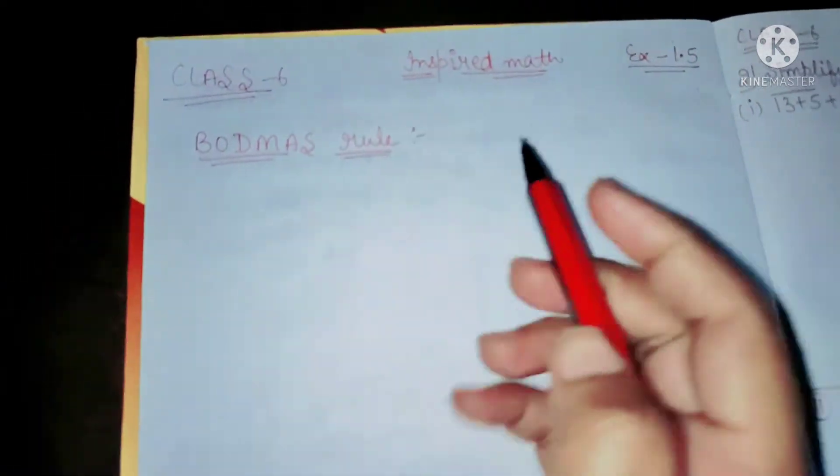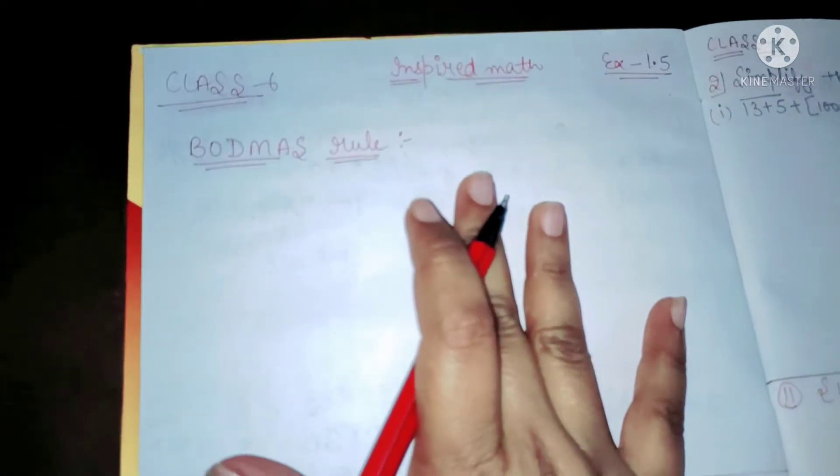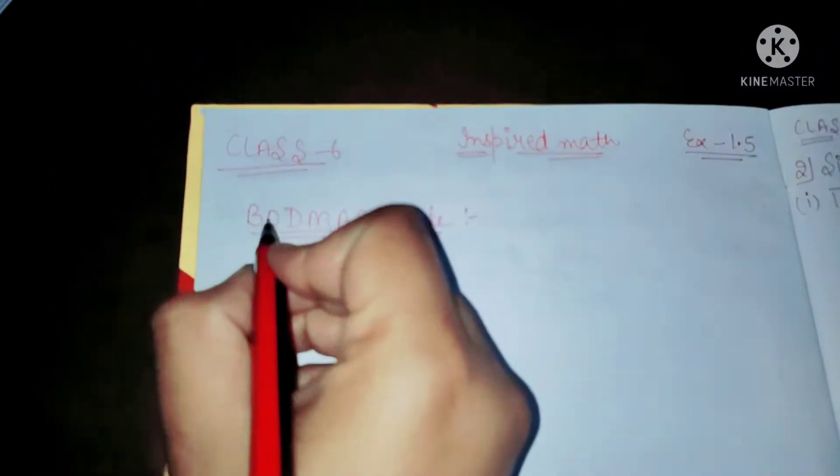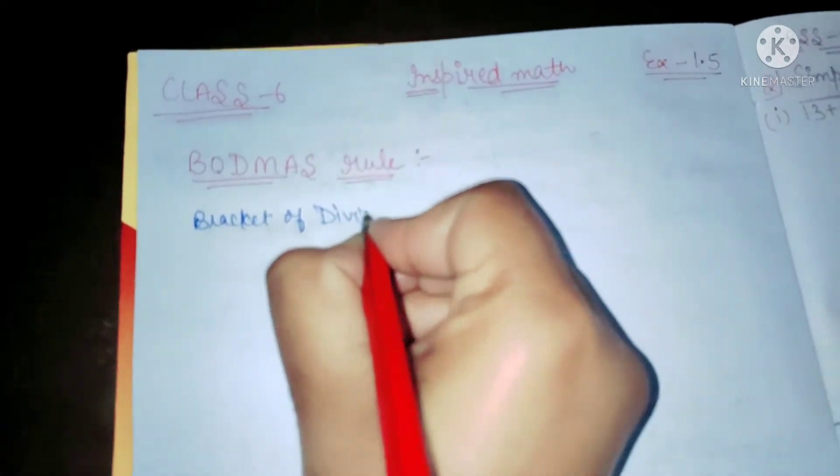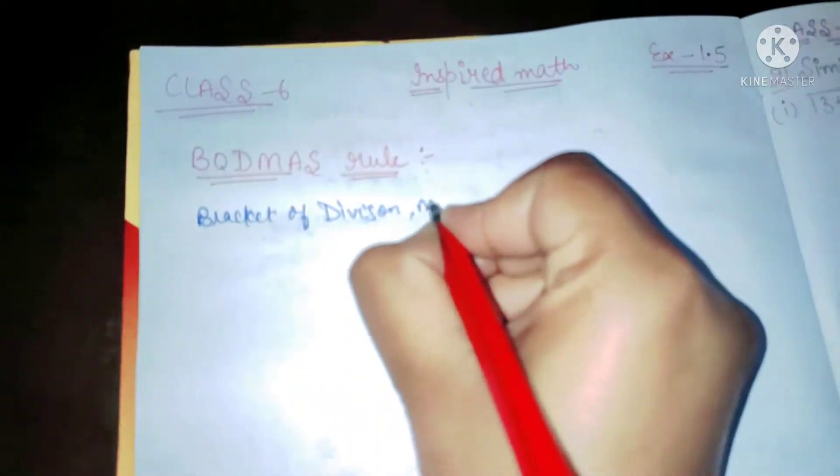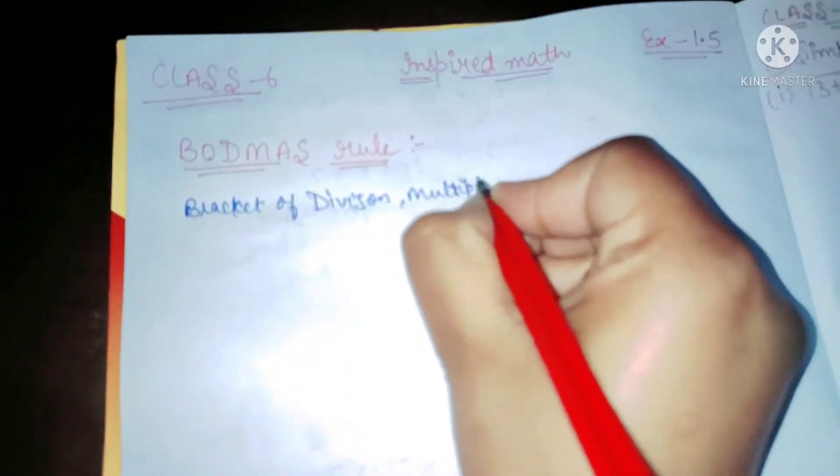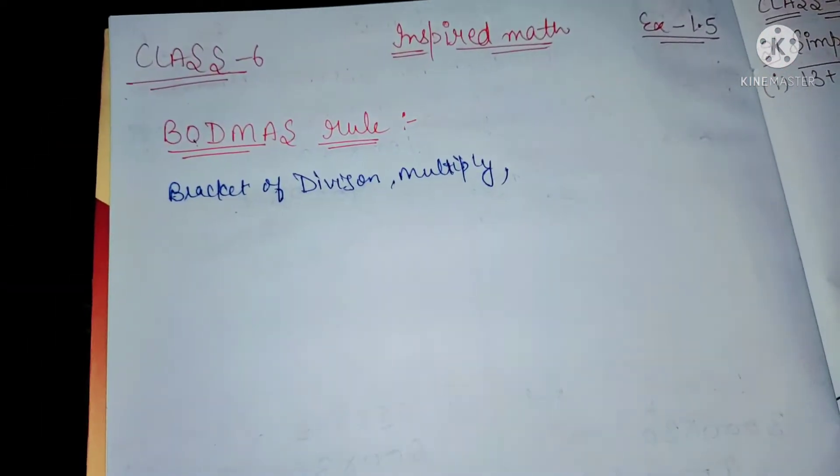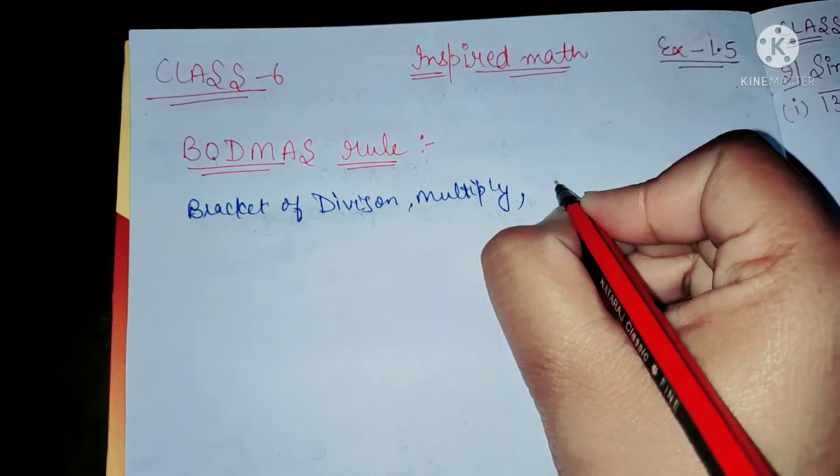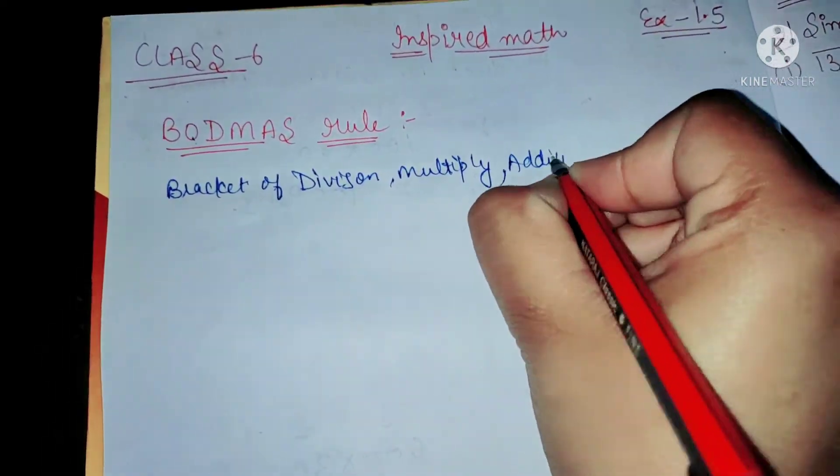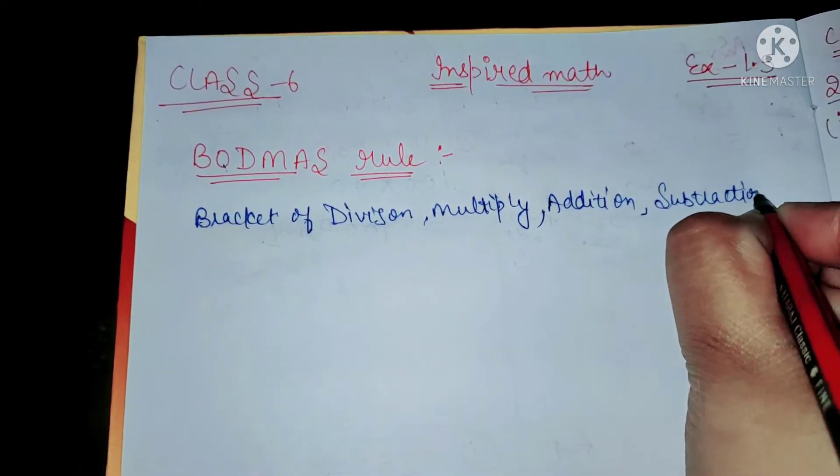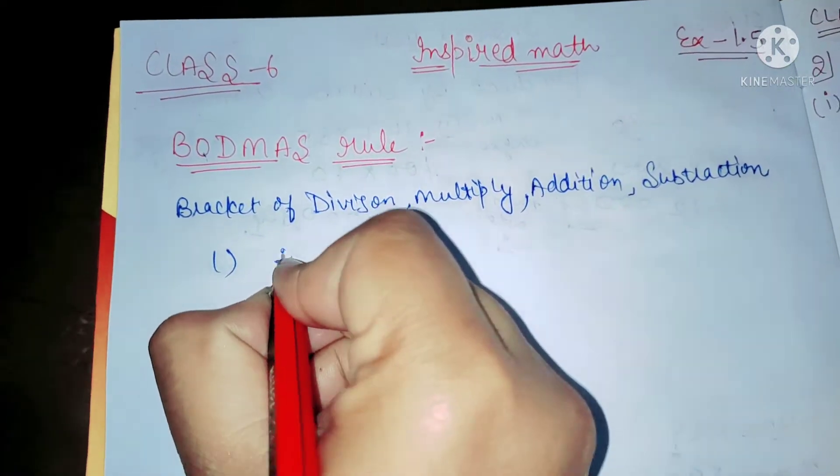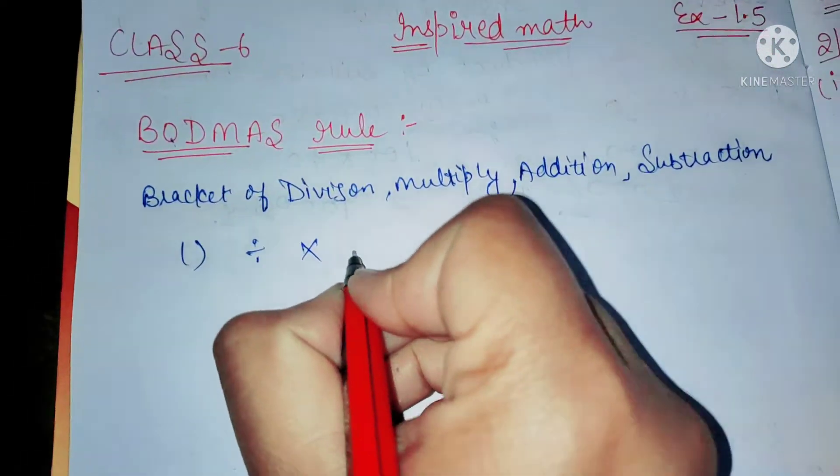In Exercise 1.5, we have used BODMAS rule. That means B for Bracket, O for Order, D for Division, M for Multiply, A for Addition, and S for Subtraction.